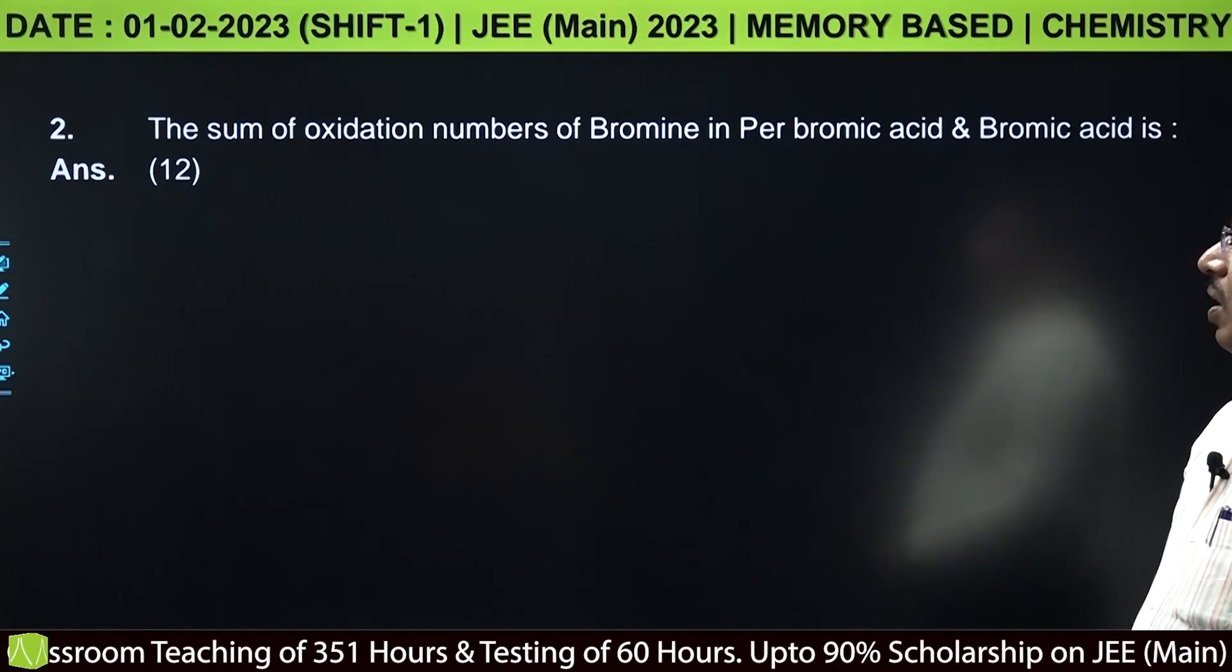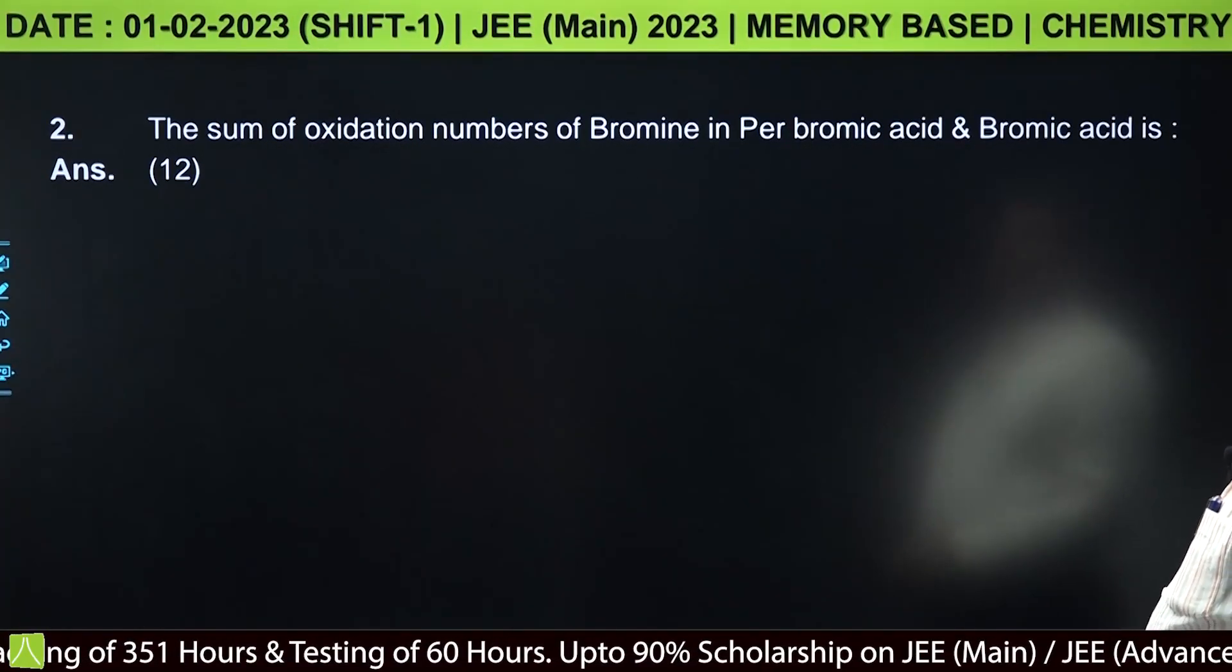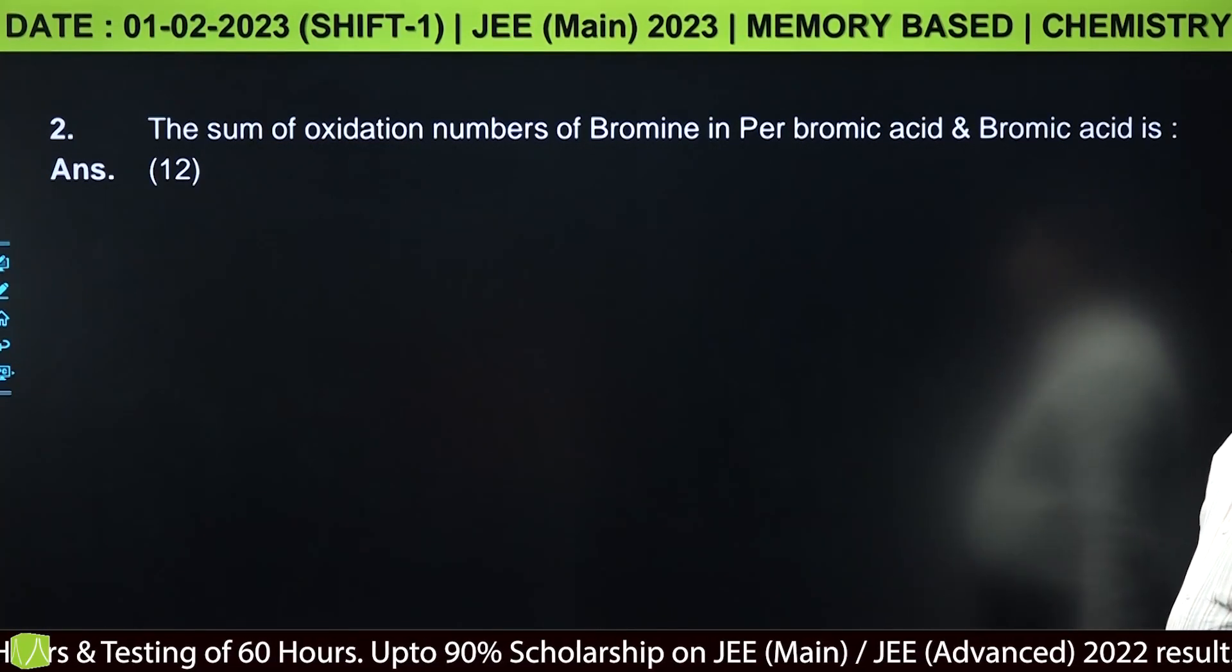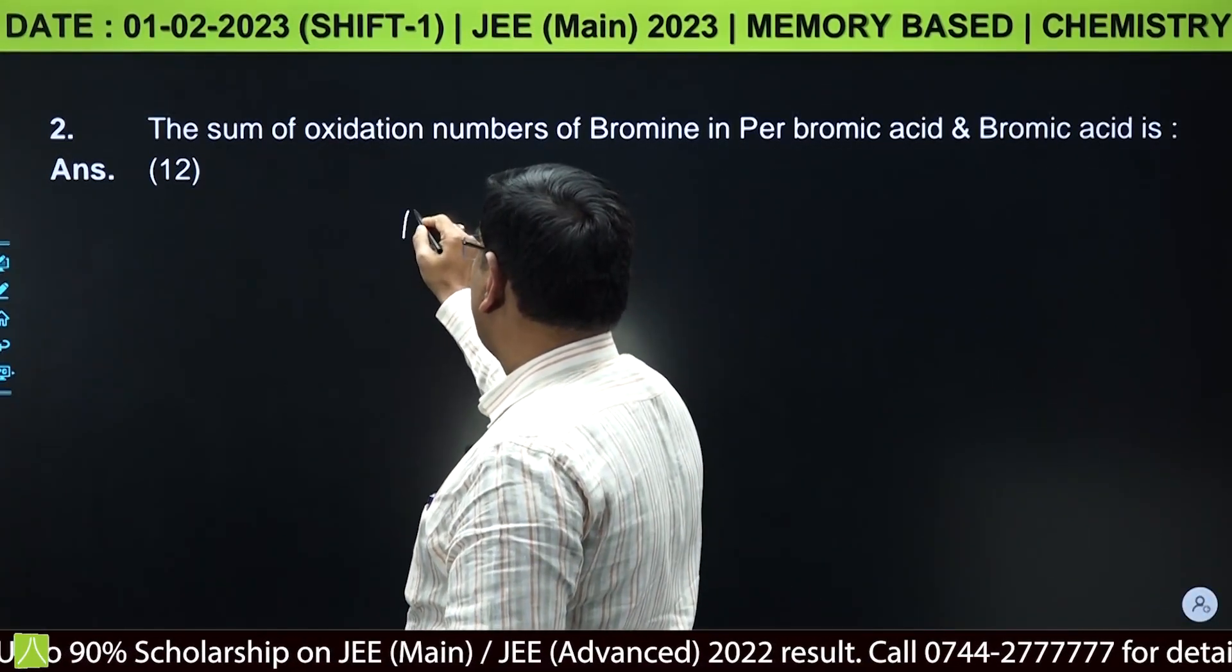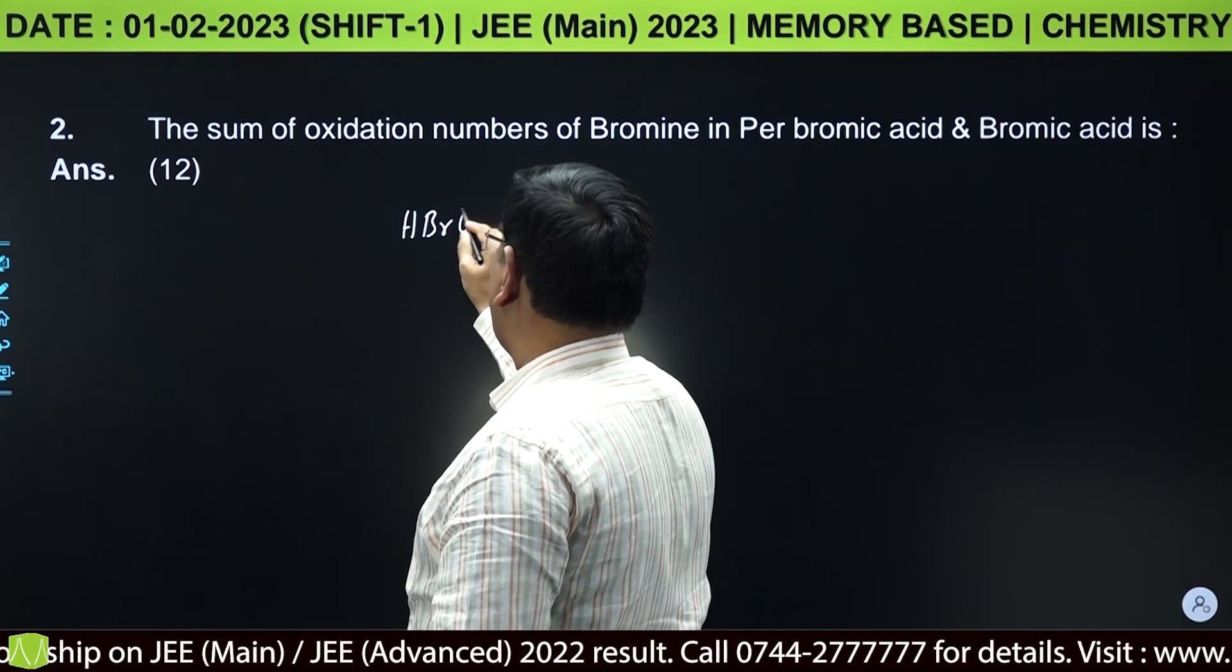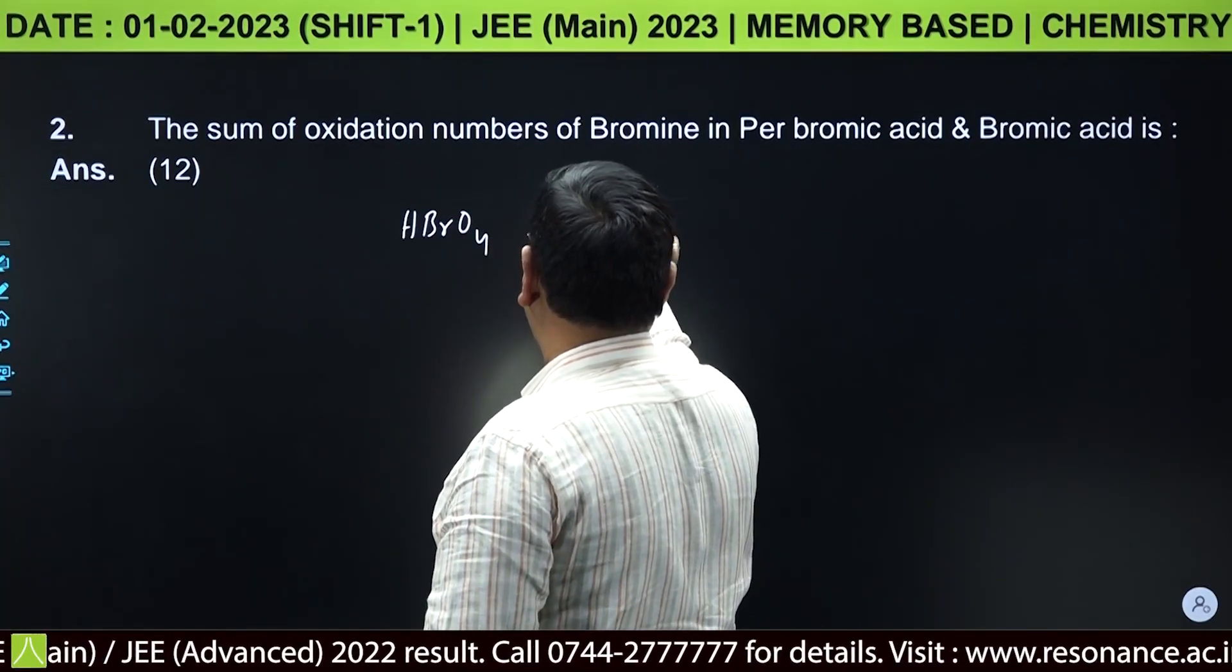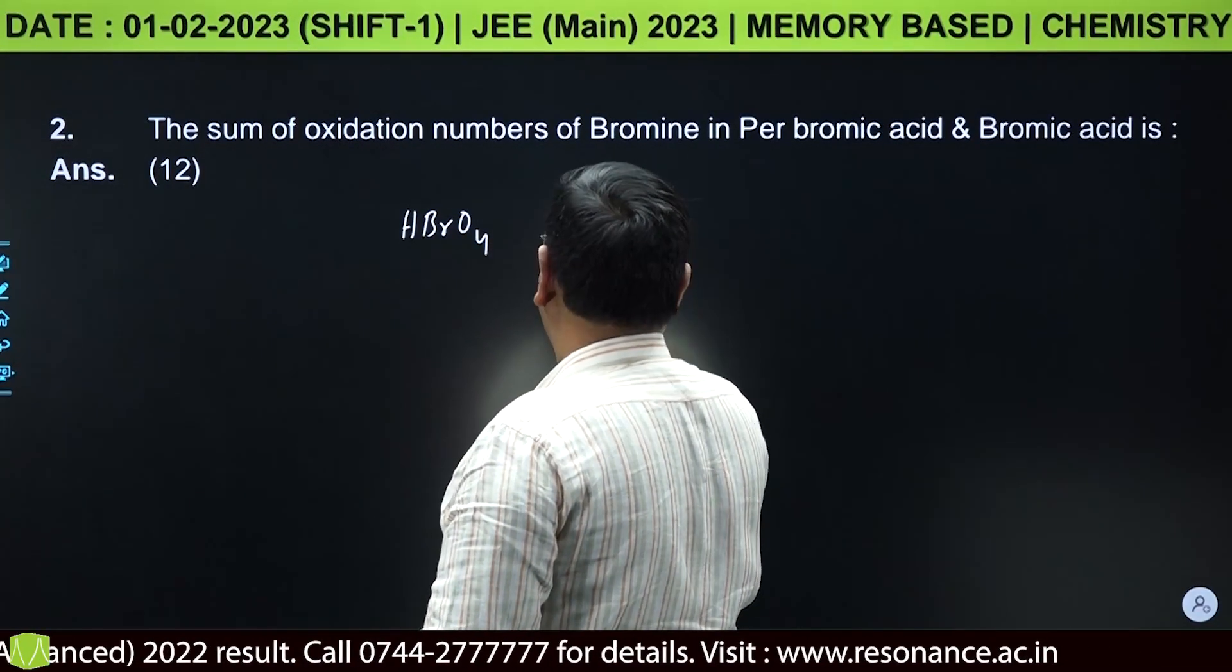The sum of oxidation numbers of bromine in perbromic acid and bromic acid. Perbromic acid HBrO4 and bromic acid HBrO3.